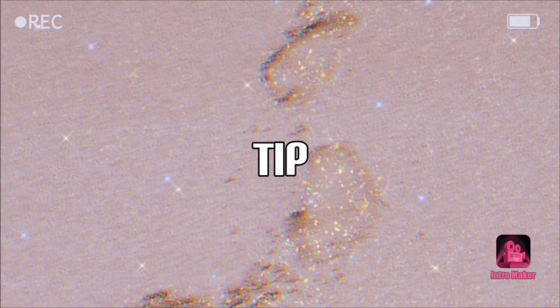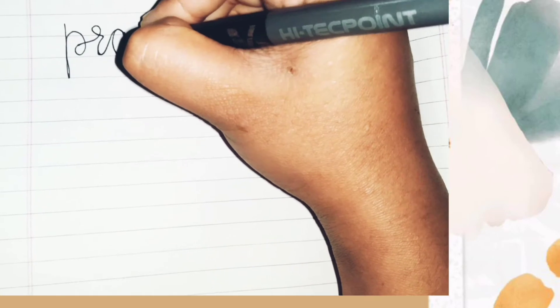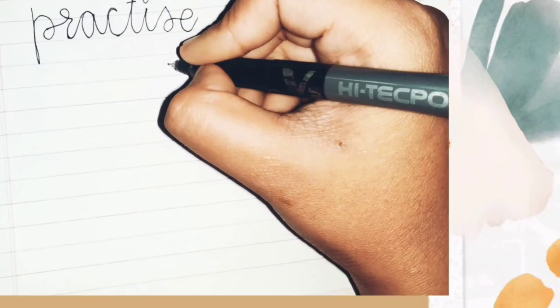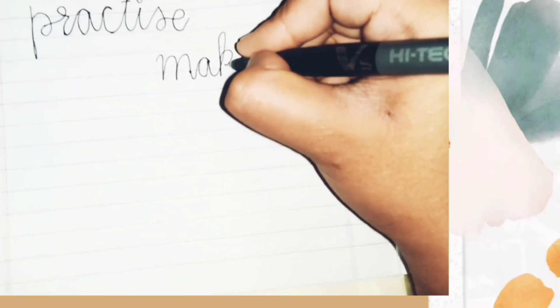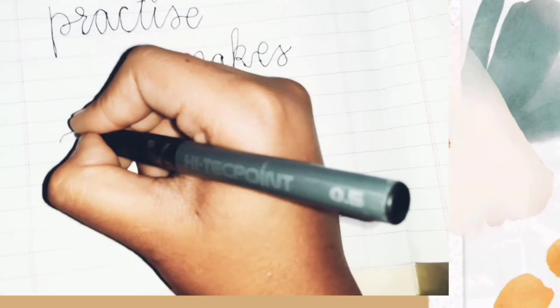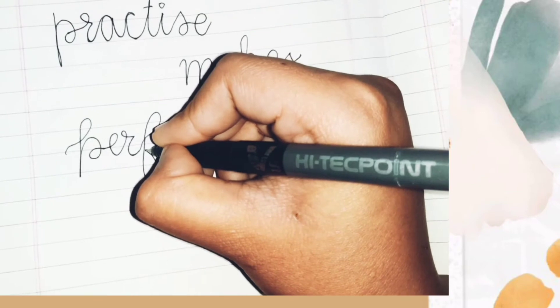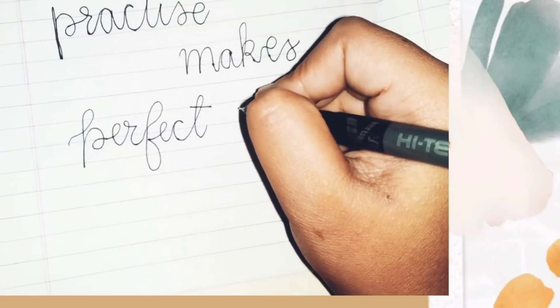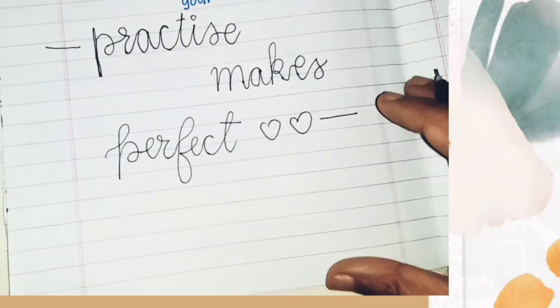Tip number five, practice makes perfect. For improving your handwriting effectively and quickly and in no time, all you need to do is just practice daily. By that, you may feel that you don't have enough time to do it separately, then no need to do it. Then how will you practice? All you need to do is just take notes during your class or during your lecture, then try to write it as you desired.